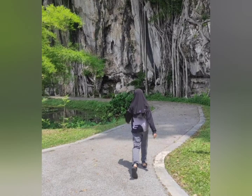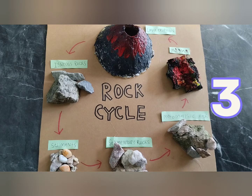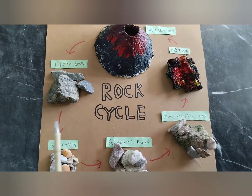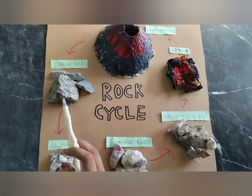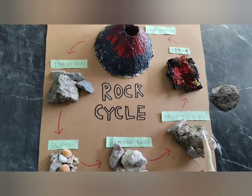Now let's go through the rock cycle one by one. There are three types of rocks: igneous rock, sedimentary rock, and metamorphic rock.